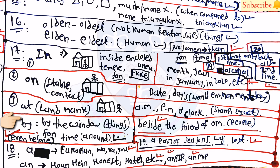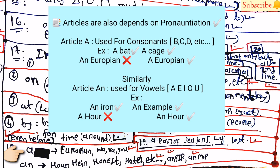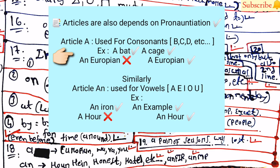For preposition 'by': use for things — for example, 'by the window.' For people, use 'beside' — for example, 'beside a friend of mine.' For articles: use 'a' before words starting with a consonant (B, C, D, etc.), but pronunciation must also be considered — for example, 'European' starts with E but takes 'a' because it is pronounced with a consonant sound. Use 'an' before words starting with vowels: A, E, I, O, U.